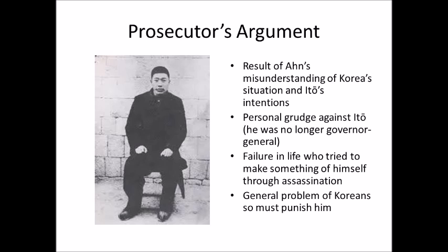The prosecutor's argument at trial was that Ahn had essentially misunderstood Korea's situation and Ito's intentions. Ito was a good guy, Korea was in a bad situation, and Ito was doing the best he could to help Korea. Ahn simply misunderstood Korea's actual situation and thought Ito was a bad guy even though he clearly wasn't — that's why he did this. So the Japanese government wasn't doing anything wrong; this was just a Korean who didn't know what was going on. Moreover, they argued that Ahn must have had a personal grudge against Ito — since Ito was no longer governor general, killing him wouldn't solve anything strategically, so it must have been personal.